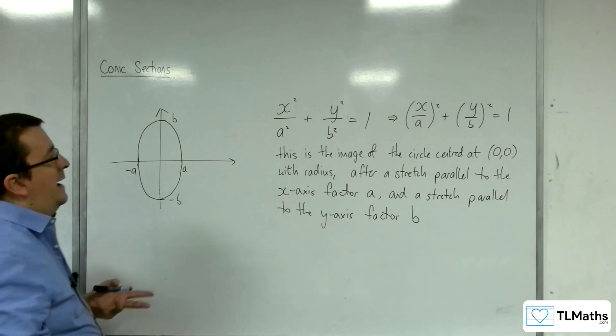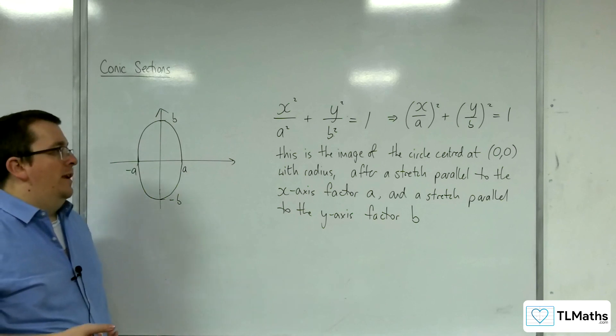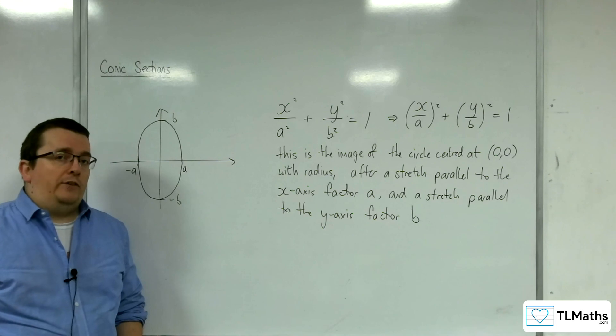So if we can work out the value of a and b, then we can sketch our ellipse. And that's the type of sketch and graph that we're going to be looking at in the next couple of videos.